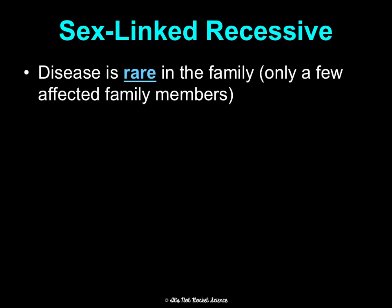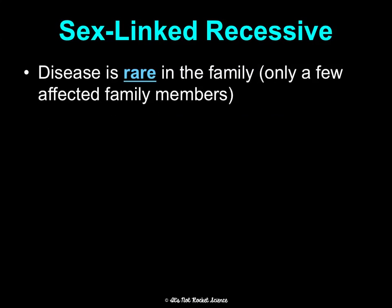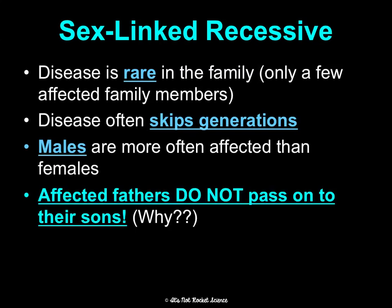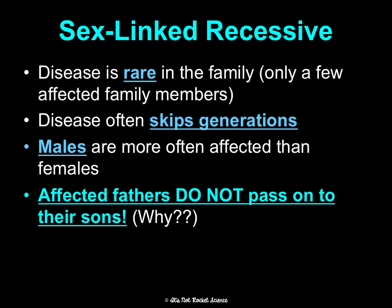For sex-linked recessive, the disease is rare in the family with only a few affected members, it often skips generations because it's recessive, but because it's sex-linked, males end up having it more than females. Affected fathers cannot pass it on to their sons — you can never see a shaded square giving it to another shaded square — because fathers give sons Y chromosomes, not X's. So if a son gets it, he has to get it from his mom. Examples include hemophilia, Duchenne muscular dystrophy, and colorblindness.